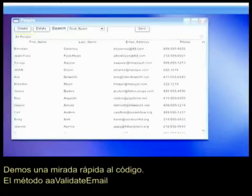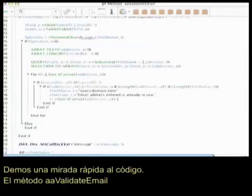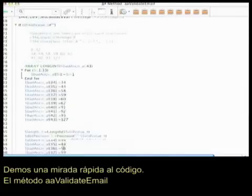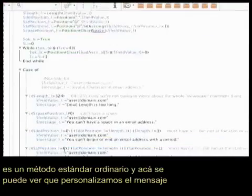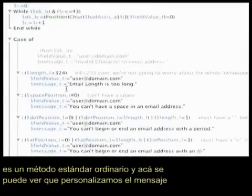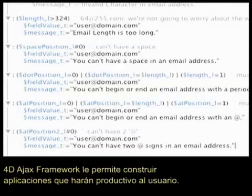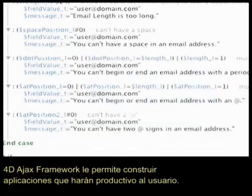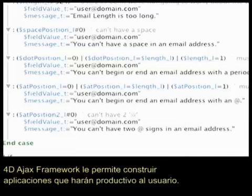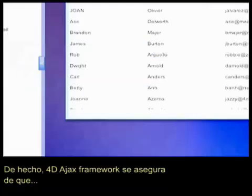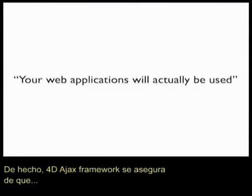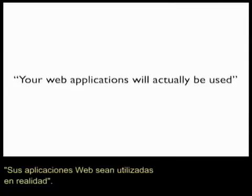Let's have a quick look at the code. Here is our validate email method. It's just a standard 4D method and you can see we just customize our message depending on how the data is entered. Very simple, very quick. The 4D Ajax framework allows you to build applications that will make your users productive, and in fact the 4D Ajax framework ensures your web applications will actually be used.